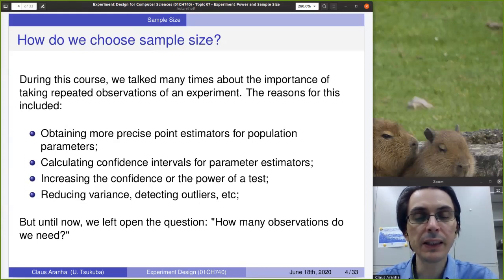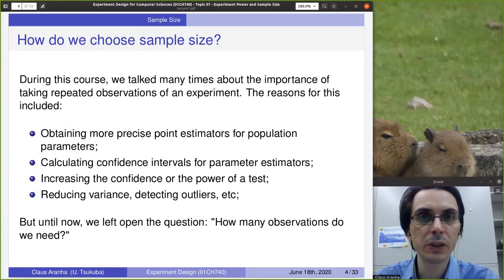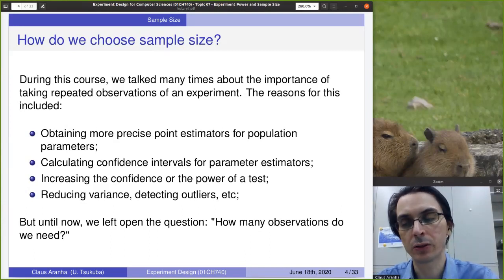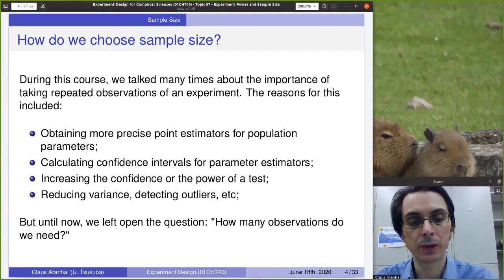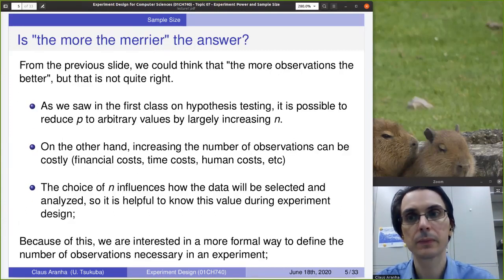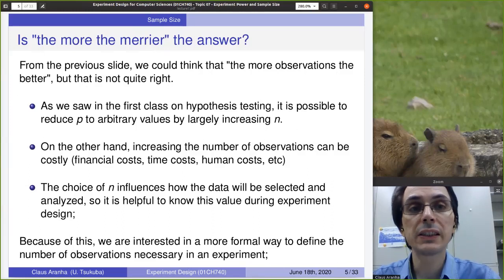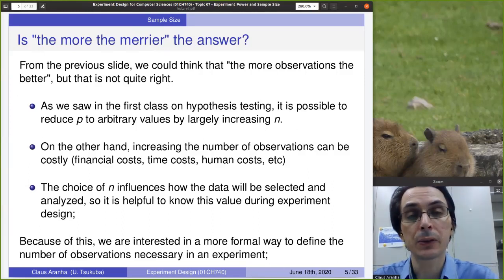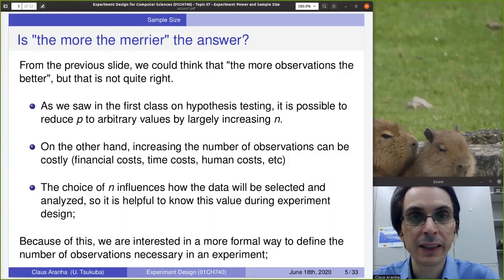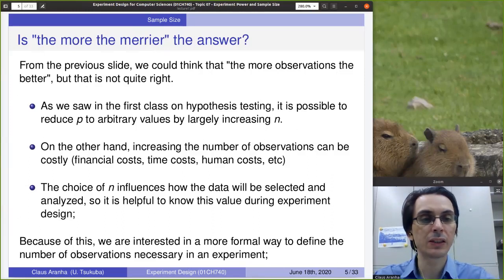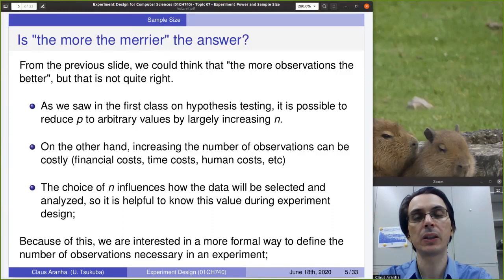So all of these are good reasons to take multiple observations when conducting an experiment. But this leaves the question: how many repetitions do you need? How many observations are necessary for our experiment? One simple — and not correct — answer is that the more, the merrier: just try to get the largest number of observations that we can.